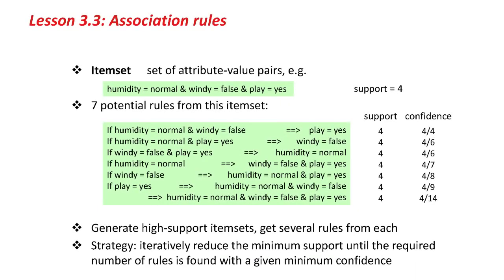I want to introduce the idea of an item set — a set of attribute-value pairs, like humidity is normal, and windy is false, and play is yes. An item set has a certain support given a dataset; here there are four instances in the dataset that are in that item set. We can permute it in different ways to produce rules, all of which have a support of 4. For example, if humidity is normal and windy is false, then play is yes — support of 4, confidence of 4 over 4, that's 100%, because all instances for which humidity is normal and windy is false have play as yes.